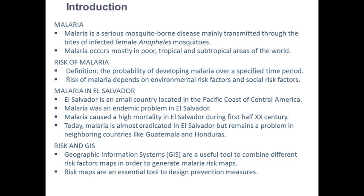However, its immediate neighbors, like Guatemala and Honduras, have among the highest number of malaria cases per capita in Central America. Geographical information systems, also known as GIS, are a useful tool to combine different risk factor maps to generate a disease risk map, such as a malaria risk map. Risk maps are an essential tool to design prevention measures, especially in countries like El Salvador, where successful mitigation results have led to a reduction in resources invested in this disease.